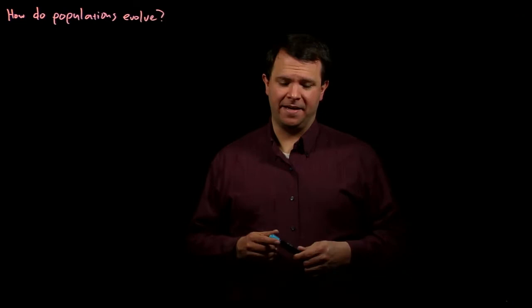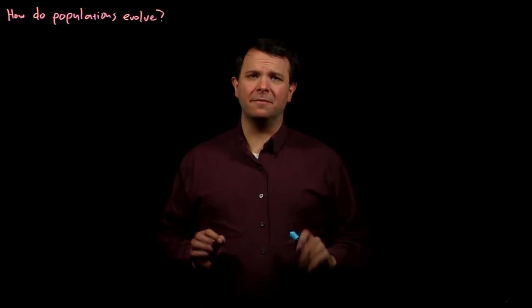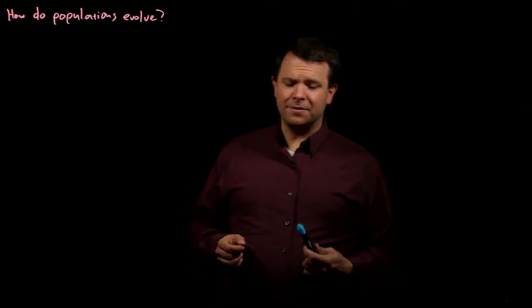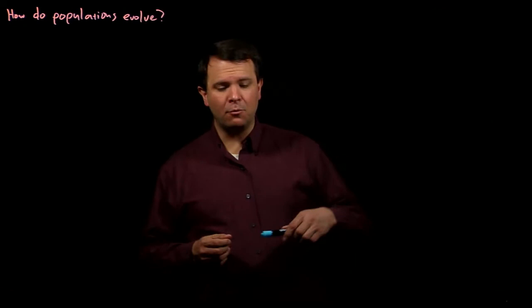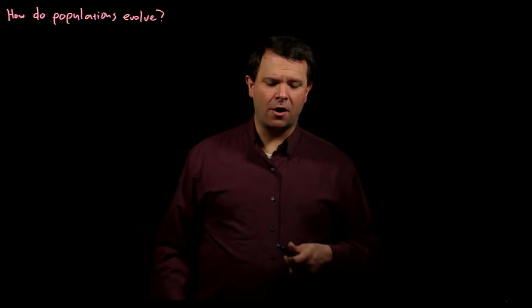However, there are a number of things that can change a population's genetics, and thus the phenotypes that are present in the population over time. So let's be really clear about what we're talking about here. We're talking about alleles because alleles are the things that are transmitted from one generation to the next. So a more precise question than how do populations evolve would be: what processes change the alleles that are present in a population or their frequencies?